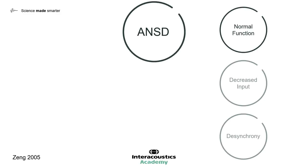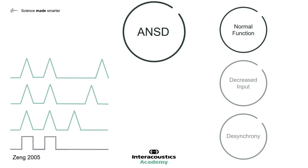Starting with normal function: a signal is presented with a gap between each pulse. Three nerve fibres are modelled here, all three firing in response to the signal. Each also has a resting background firing rate, which does not match up with any signal or with each other. The average response at the top shows the responses to the two signals are clearly identifiable against the background resting firing rate.